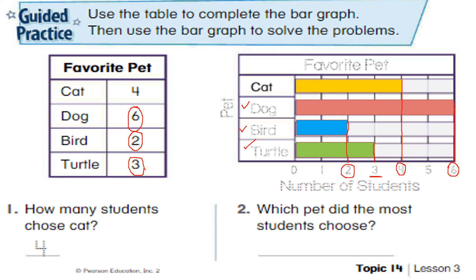Question one: how many students chose cat? Look at the bar graph — four students chose cat. Question two: which pet did the most students choose? The most means the longest bar. Look at the graph — the dog has the longest bar, so most students chose dog.